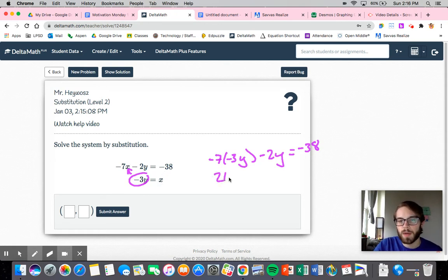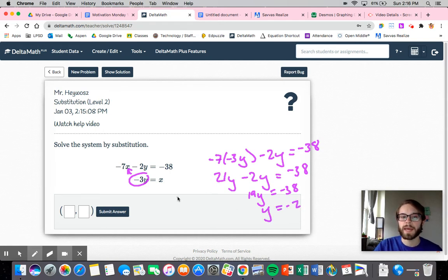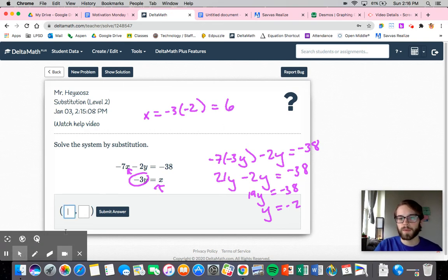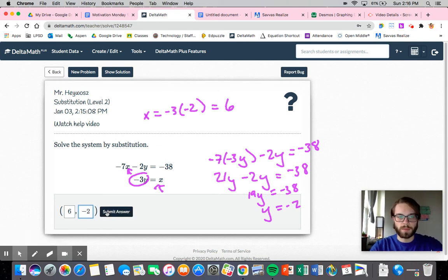So that would be 7 times negative 3y, which is 21y minus 2y equals negative 38. So that would be 19y equals negative 38. And so y is equal to negative 2. All right. Now, again, I just need to plug in. And usually, I'm going to pick this one to plug into. It just makes it easier. So I would say x is equal to negative 3 times negative 2, so is equal to 6. All right. So if we were to plug that in, we would say 6, negative 2. We should be good to go.